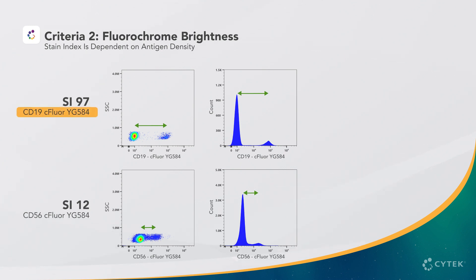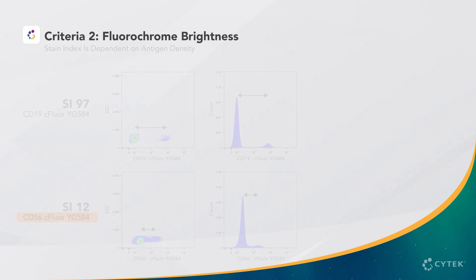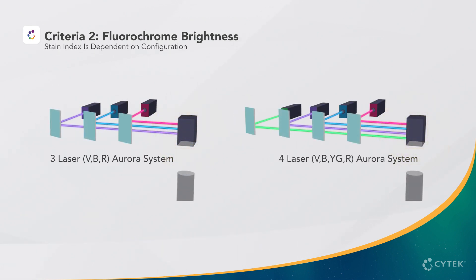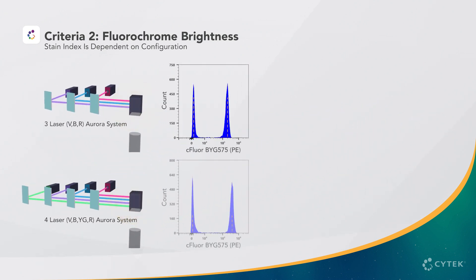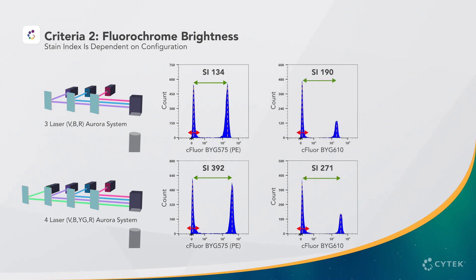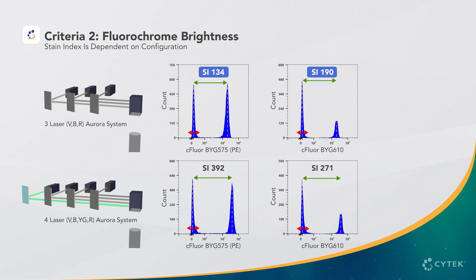For example, Seafloor YG584 conjugated to a CD19 antibody has a higher stain index compared to CD56 on the same fluorochrome. Remember that the optical configuration of your instrument can also impact the brightness of a fluorochrome, so be sure to check the stain index for your specific hardware when designing a panel. For instance, Seafloor BYG575 and Seafloor BYG610 show a higher stain index on an instrument equipped with the yellow-green laser compared to a 3-laser configuration without it, because both fluorochromes are most efficiently excited by the yellow-green laser, producing a much brighter signal.